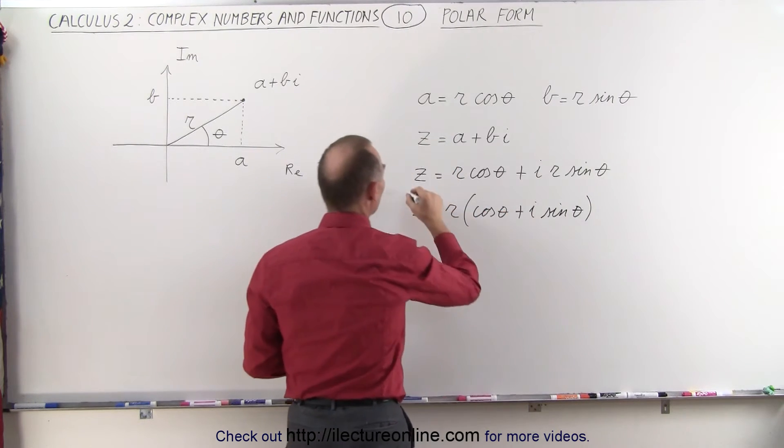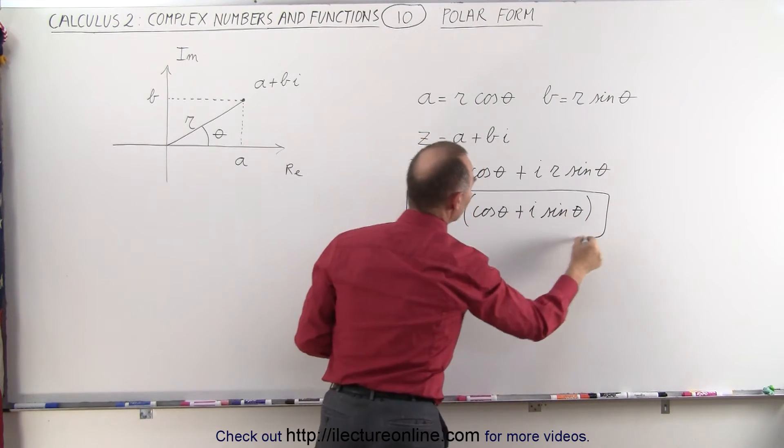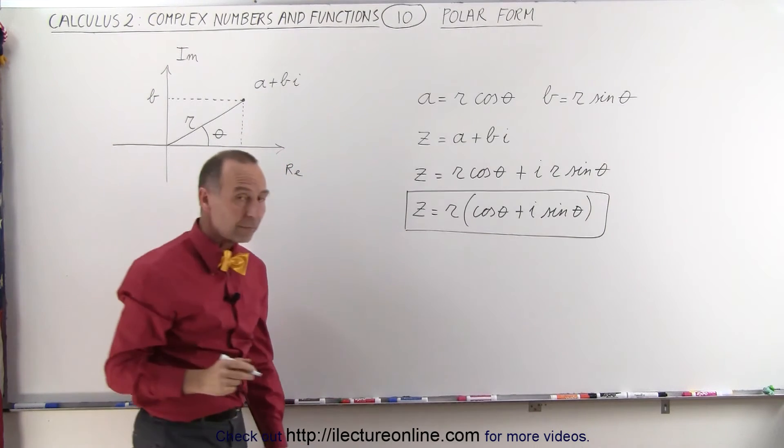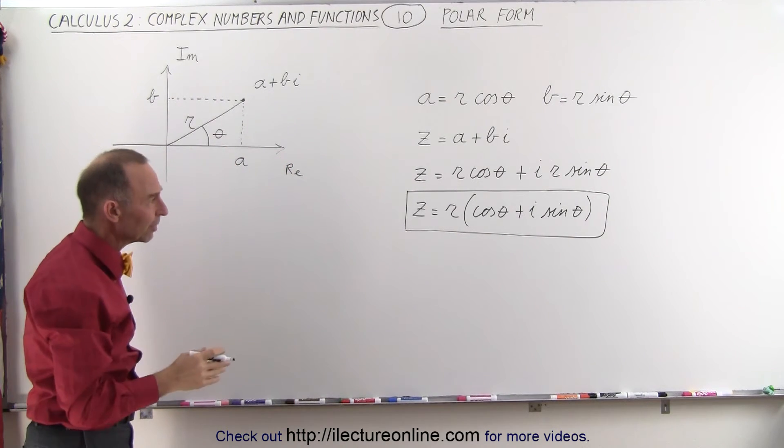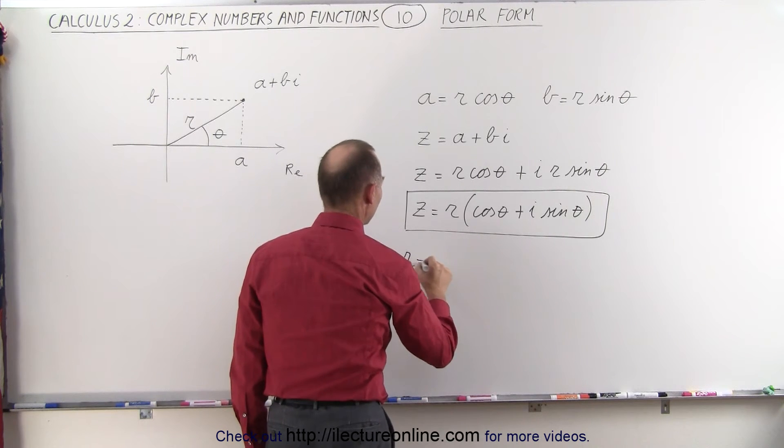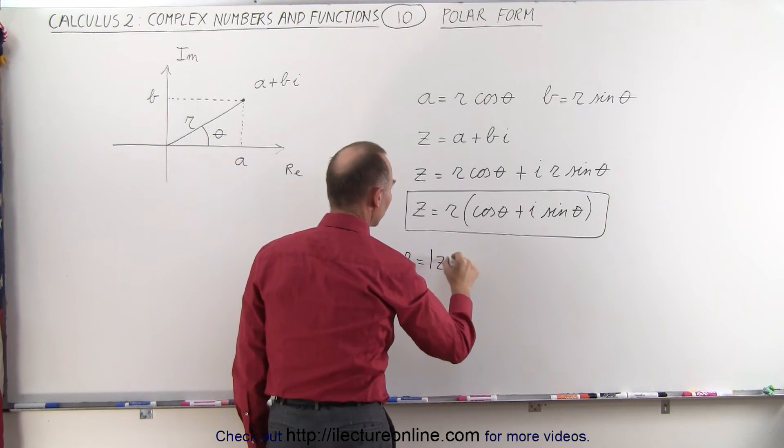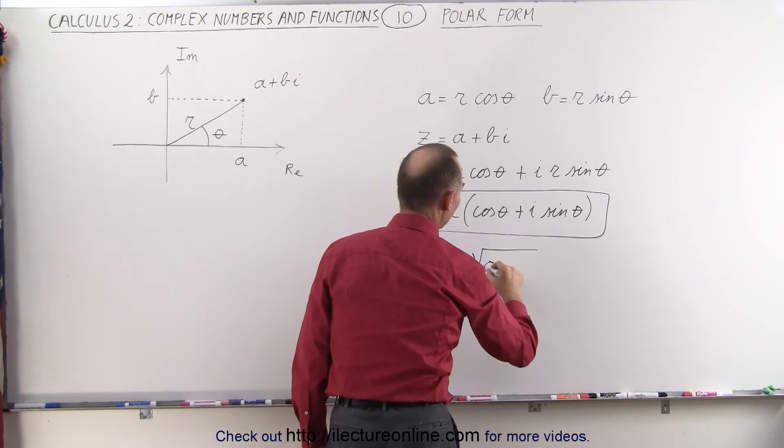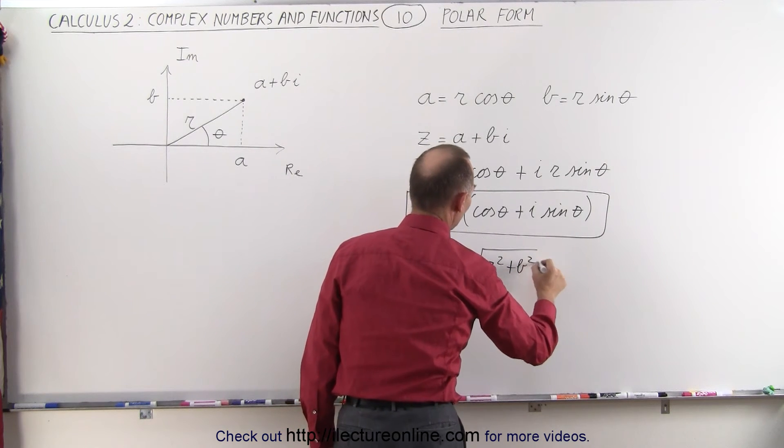And so this becomes the polar representation of that complex number. Now let's investigate the value of R and theta. R can be said to be equal to the modulus, which is equal to the square root of A squared plus B squared.